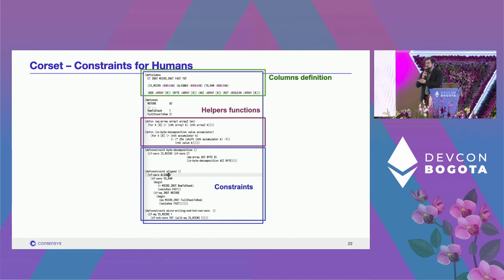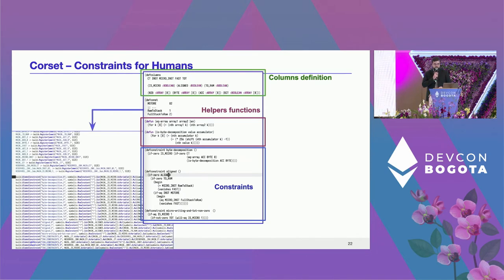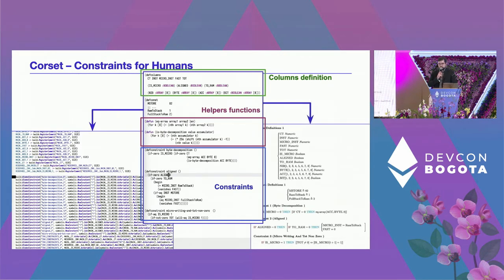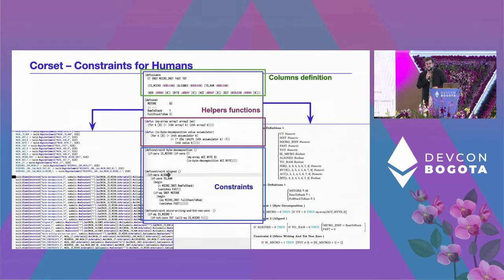Finally, we have the meat of the data: the constraints themselves. Here we have two or three example constraints — one doing a byte decomposition of some data, another checking that memory is aligned. From this Corset description, we generate a lot of Go code for the prover, since writing this by hand would be a nightmare. We can also generate LaTeX — here you can see a piece of LaTeX and its PDF rendering, ready to be incorporated into the spec. Corset is really a cornerstone of our workflow.